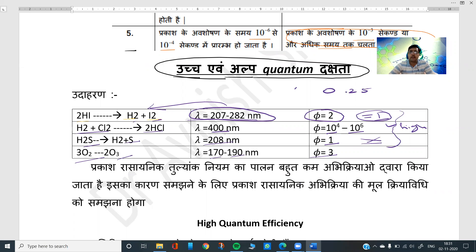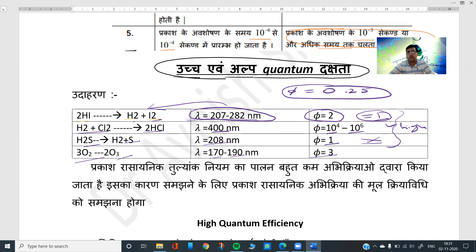φ is equal to 0.2 for ammonia decomposing into nitrogen and hydrogen. So these reactions do not follow photochemical equivalence. The reason for this is what we will understand in today's lecture.